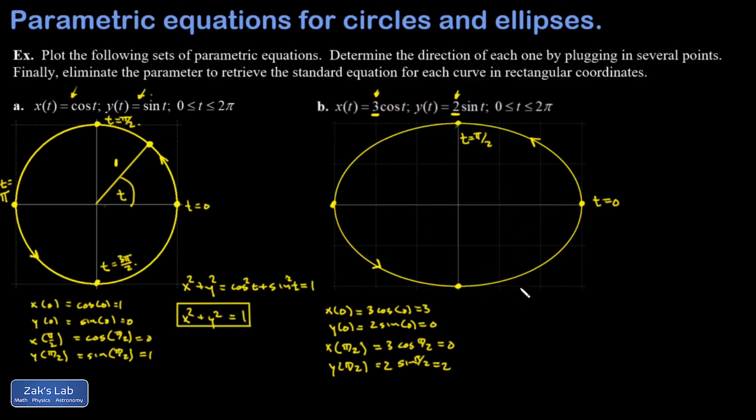The ellipse requires a slight modification. I'm going to prep by saying x over 3 is cosine t and y over 2 is sine t. Now I'm ready to square these things and I can use the same identity. x over 3 squared plus y over 2 quantity squared is equal to cosine squared t plus sine squared t.